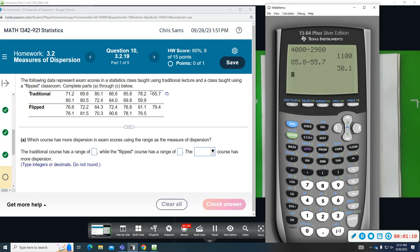You get 30.1 as the range measure of spread. In the flipped, the highest score looks to be 91.1. We're going to take away the smallest value, which is 64.3.